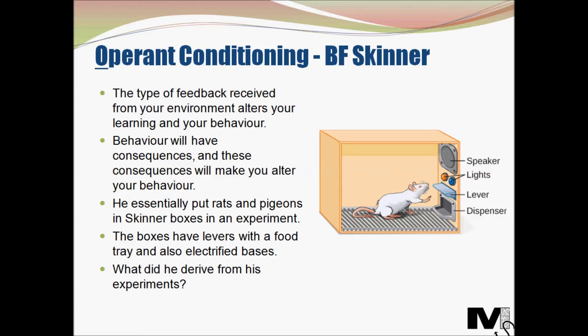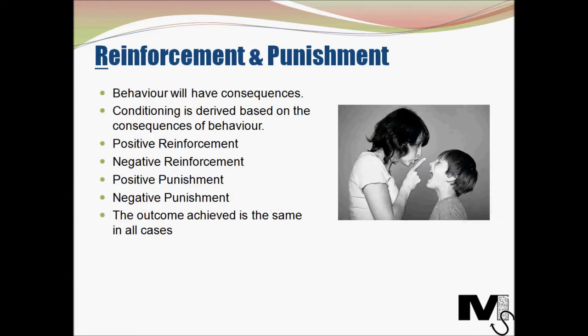So other than getting angry rats with full tummies, what did Skinner actually achieve from his experiment? He came up with the concepts of reinforcement and punishment. He derived that behavior will always have consequences and conditioning is based on those consequences. One can be conditioned to behave in a certain way based on presenting the right type of consequences. The consequences of your behavior can be of two types — reinforcement and punishment — and there can again be two subtypes: positive and negative.